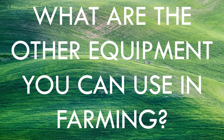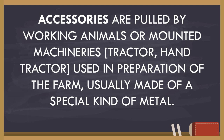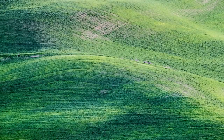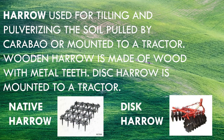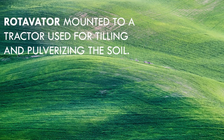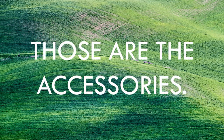But what are the other equipment you can use in farming? We have accessories. Accessories are pulled by working animals or mounted to machineries like a tractor or hand tractor, and are used in preparation of the farm. They are usually made of a special kind of metal. Plow: pulled by a working animal or a tractor, used for tilling large areas of land, making furrows and row cultivation. Harrow: used for tilling and pulverizing the soil, pulled by carabao or mounted to a tractor. Wood and harrow is made of wood with metal teeth. Rotavator: mounted to a tractor, used for tilling and pulverizing the soil.